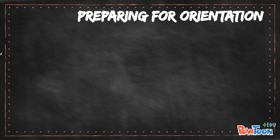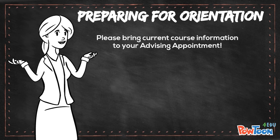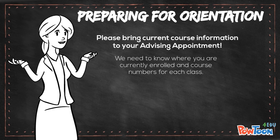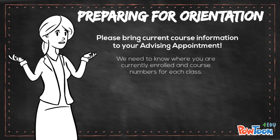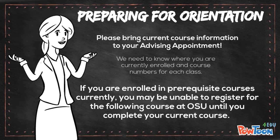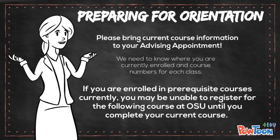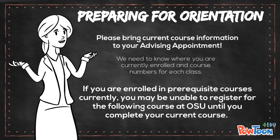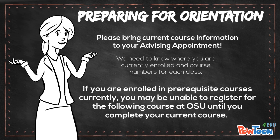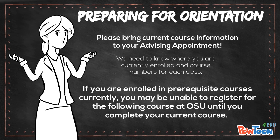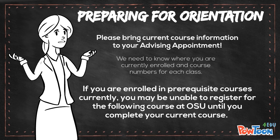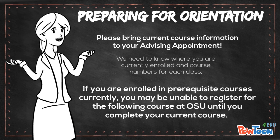If you are currently enrolled in classes, please make sure to bring your current course information with you to orientation. We need to know where you are enrolled and the course numbers for the classes you are taking. If you are currently enrolled in a prerequisite to a course you want to take here at Ohio State, you may not be able to enroll in the Ohio State course until you have completed your current class and received a grade. For example, if you are enrolled in an equivalent to our Math 1150 and you want to take Math 1151 your first semester at Ohio State, you will not be able to register for that math class until you have received and submitted your final grade in the Math 1150 equivalent.